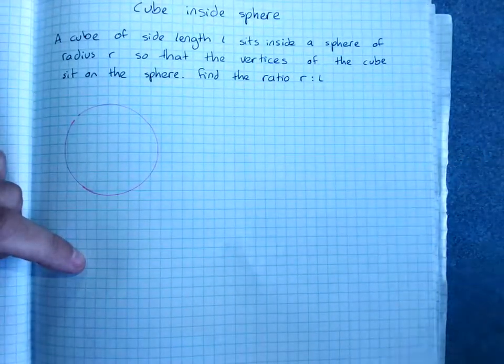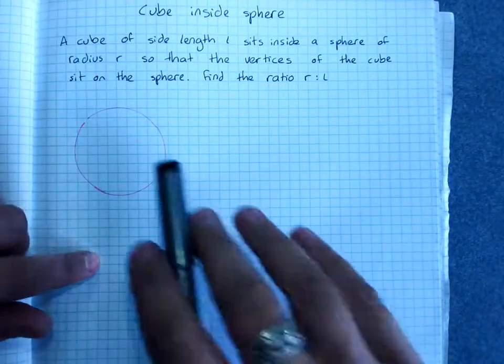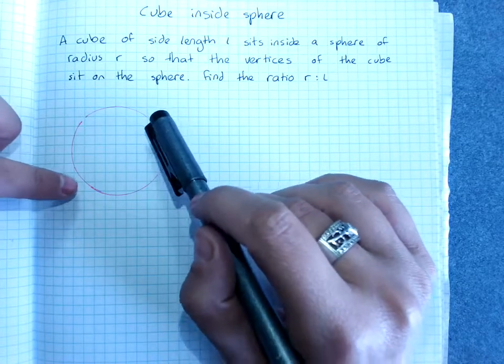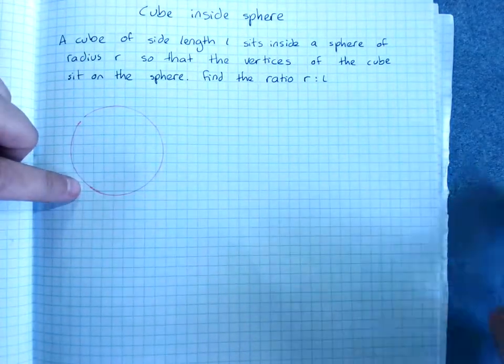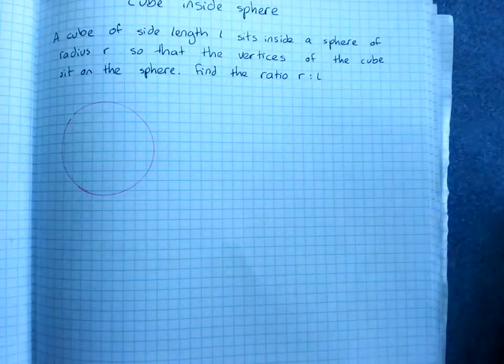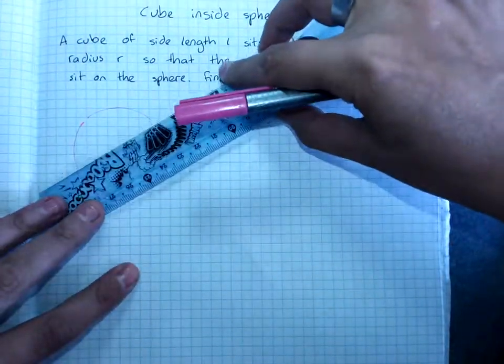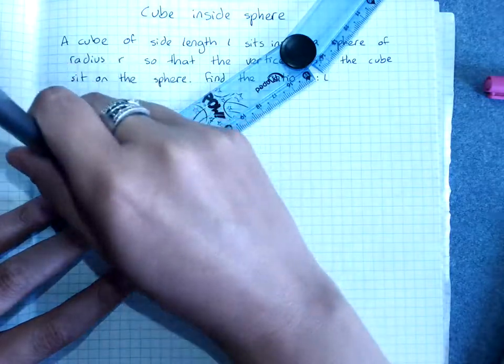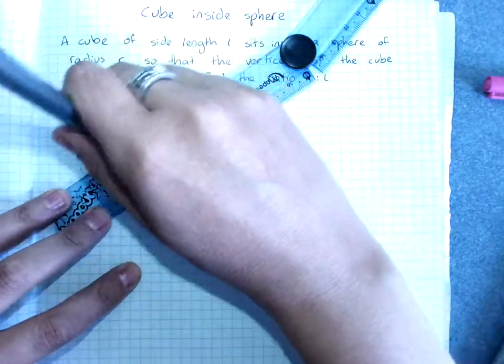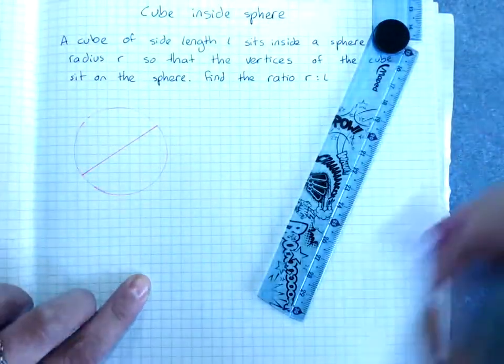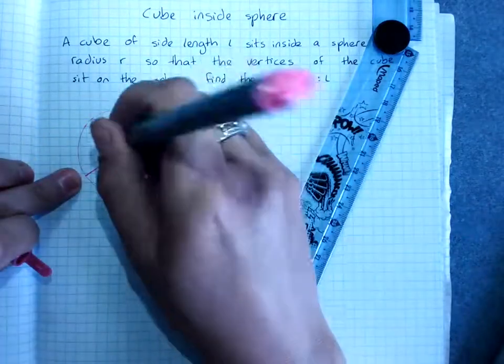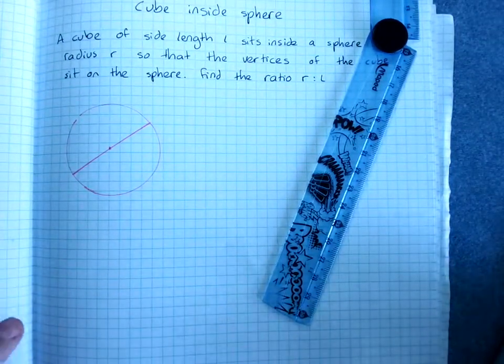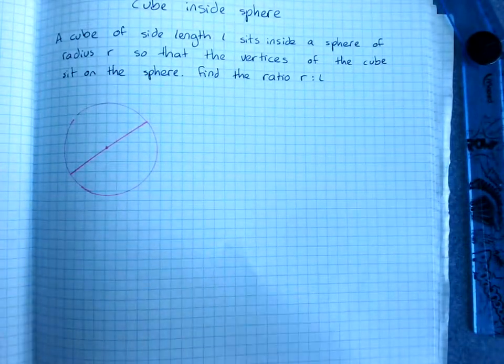So the longest diagonal of a cube that fits inside a sphere is going to be the sphere's diameter. So if I drew in the sphere's diameter, because anywhere from outside to outside, passing through the center, is the diameter, then that's the longest dimension of the cube.